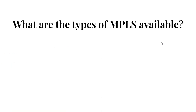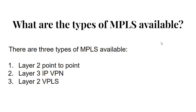Question 6: What are the types of MPLS available? Answer: MPLS comes in three main types. 1. Layer 2 point-to-point, suitable for companies needing high bandwidth between a few sites. 2. Layer 3 IP VPN, ideal for large multi-site enterprises, mergers, and any-to-any connectivity. 3. Layer 2 VPLS, popular for delivering Ethernet services, combining MPLS and Ethernet.